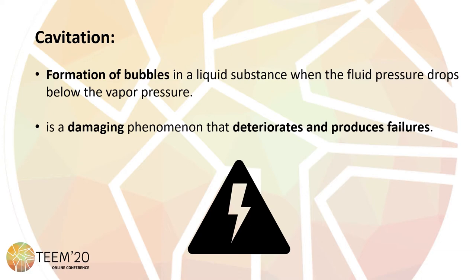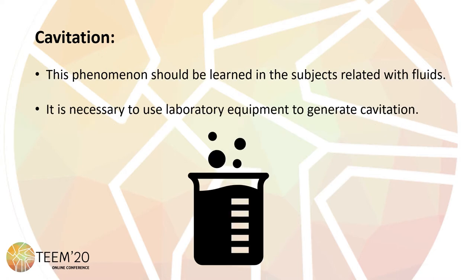Engineering and physics students must be familiar with this phenomenon in order to avoid it or at least reduce the risk of it occurring. This phenomenon should be learned in the subjects of fluid mechanics or hydraulic machinery, but it is not always easy to visualize. These two subjects are basic training subjects. Sometimes it is necessary to use laboratory equipment to generate cavitation, but this equipment can be expensive and is not always available at all universities.